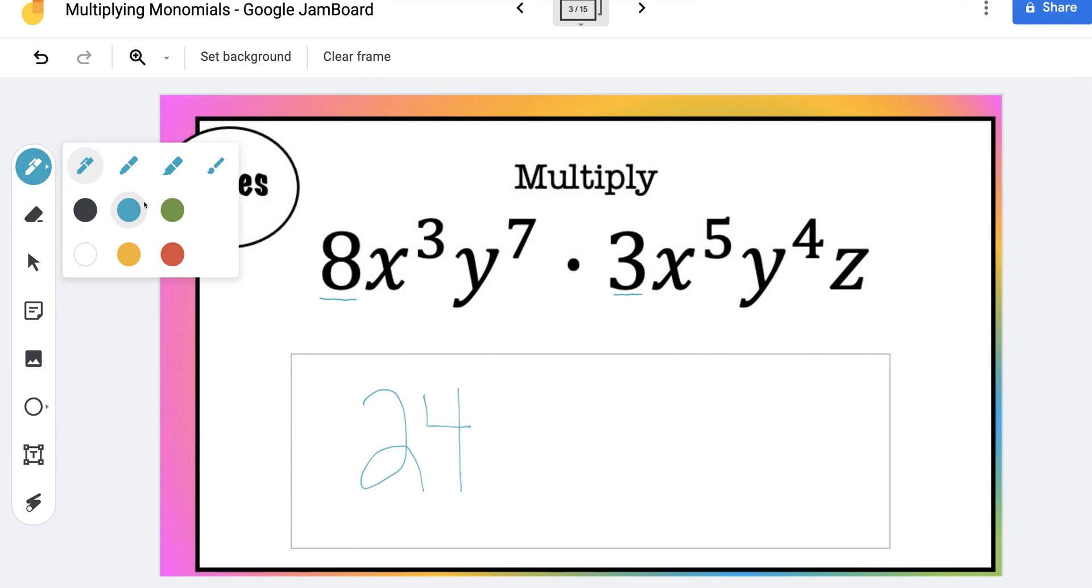And then come over here and grab a different color. And when I multiply x to the 3rd times x to the 5th, that gives us x to the 8th. Because remember you add the exponents when you have the same basis, right?